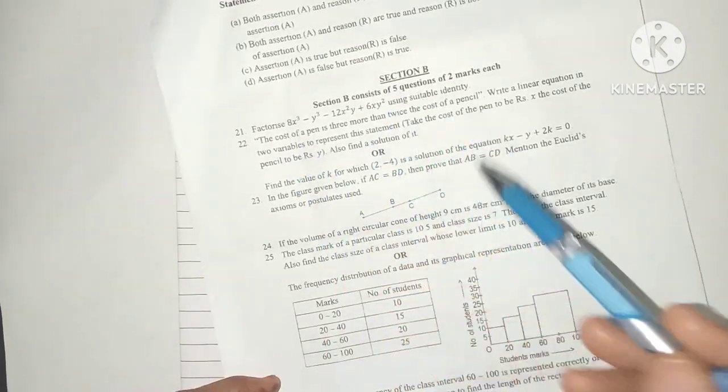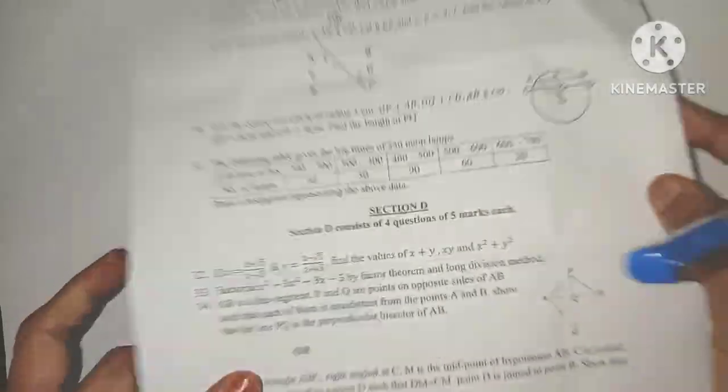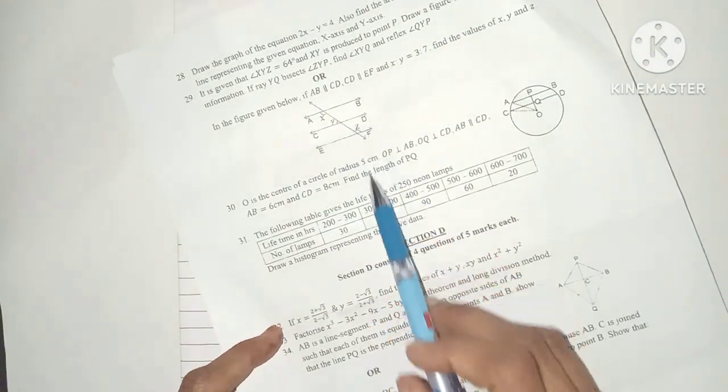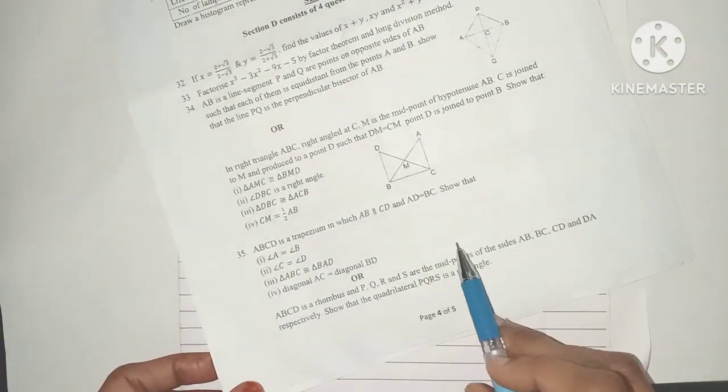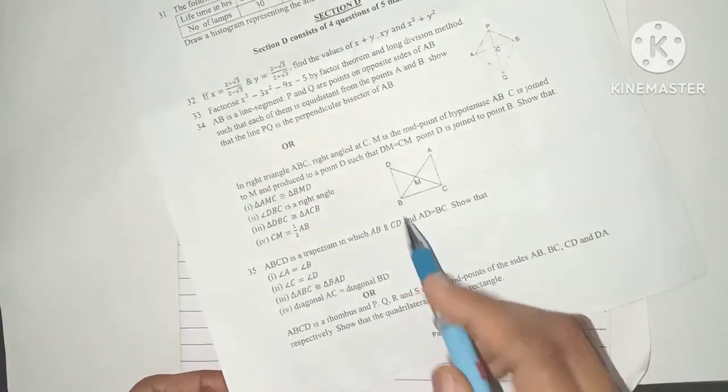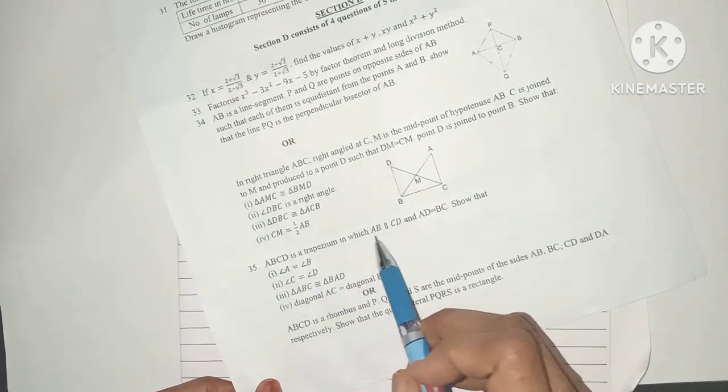Decide which section you will attempt first and approximately how much time you can give to each section. So friends, if you do all this planning during the reading time, then you need to only focus on solving the questions during the writing time.